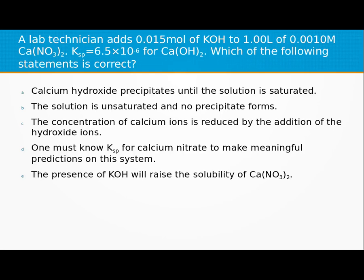On this one we're wanting to know if a precipitation is going to occur. A lab technician adds 0.015 moles of KOH to 1 liter of a 0.001 molar calcium nitrate solution.